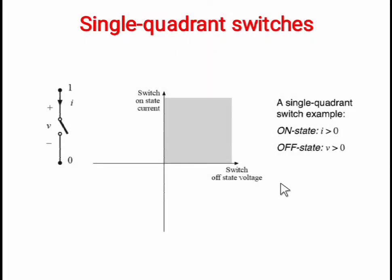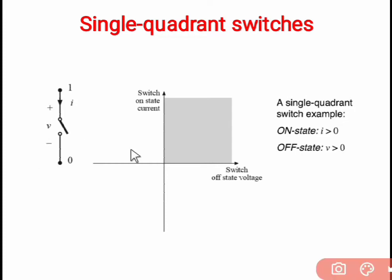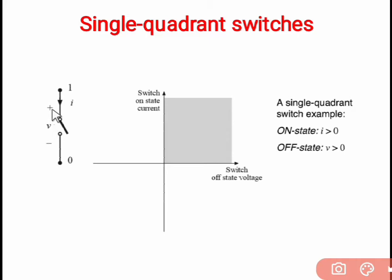For single quadrant switches: this is the first quadrant, this is the second quadrant, this is the third, and this is the fourth quadrant. If we consider the normal switch or a toggle switch, it is on and off manually. If the switch is open, no current will flow from terminal 1 to terminal 0. So the full voltage appears across the two terminals 1 and 0, which is V plus and minus. When switch is in off condition, the positive voltage V appears across the switch.